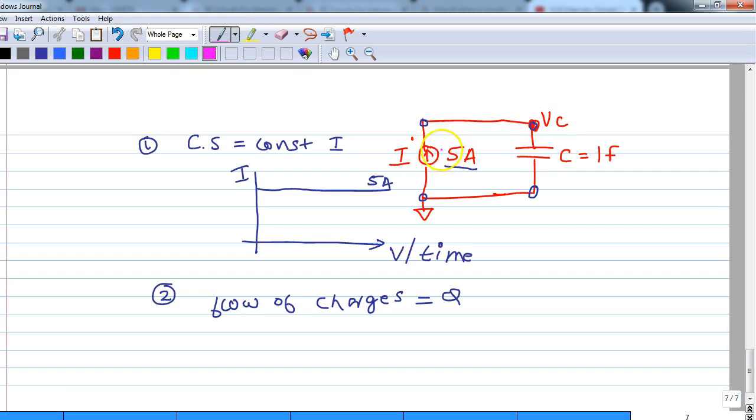We know that the current source is nothing but flow of charges. So it will put charges on these capacitor plates. What will happen now? The capacitor will have some positive voltage put across one of the plates, and this positive charge will displace equal number of negative charge.